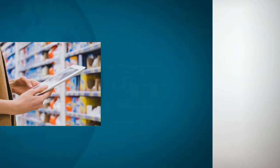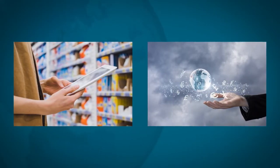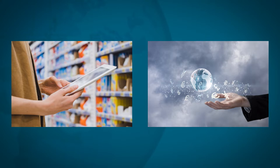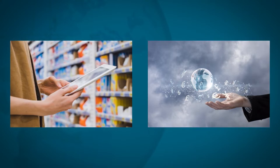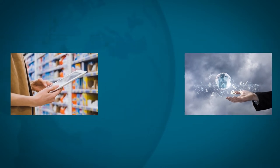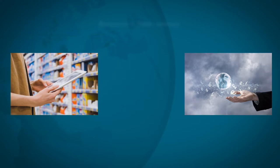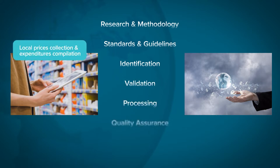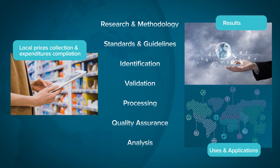First, let's look at what producing the ICP's results entails. Simply put, local price data collected and expenditure data compiled for the ICP by national statistical offices allow us to calculate purchasing power parities, or PPPs for short, as well as price levels for each participating economy. Of course, there are many other stages involved in the ICP lifecycle, such as conducting research and establishing methodology, setting standards and providing guidelines to countries, identifying what goods and services to price, data collection, validation, processing, followed by quality assurance, and ultimately disseminating and analyzing the results and advising on how to use them.